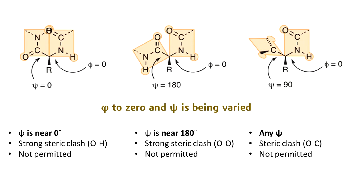Now, if psi is near 180, we again have very serious steric clashes between the two oxygen atoms of the carbonyl groups of the two successive amino acids. For any value of psi other than 0 and 180, there would be significant steric clashes between the two carbonyl groups of the two successive amino acids. So, this means no conformation associated with phi equal to 0 is permitted.